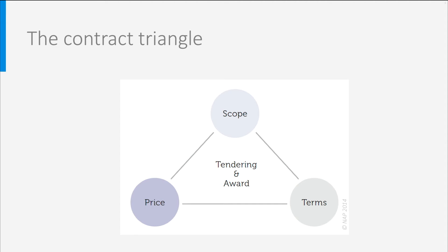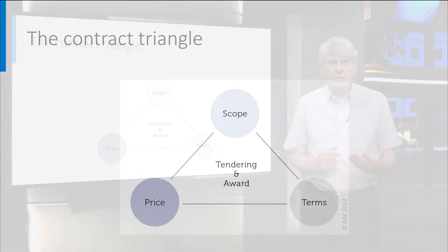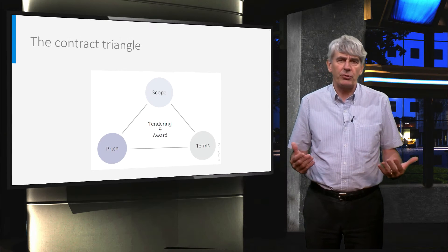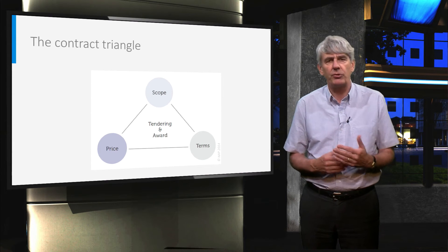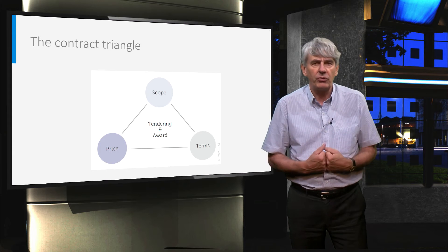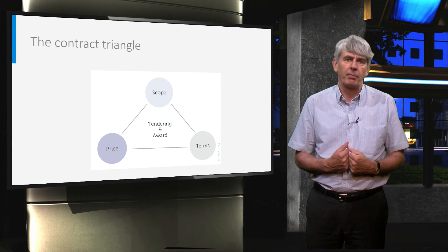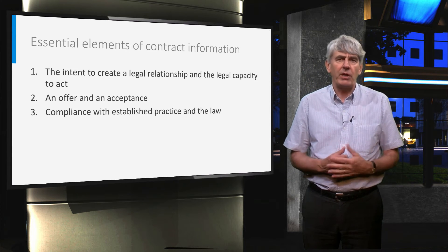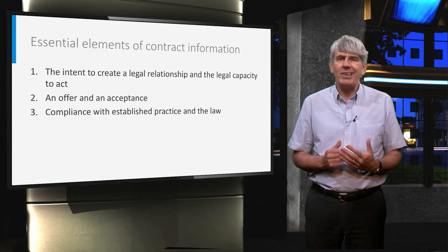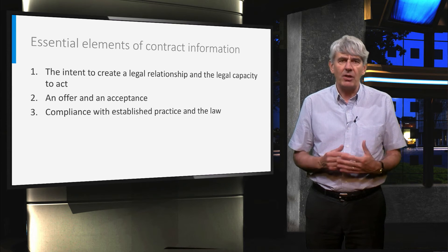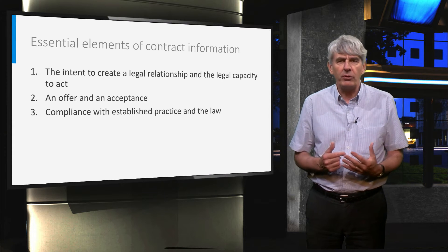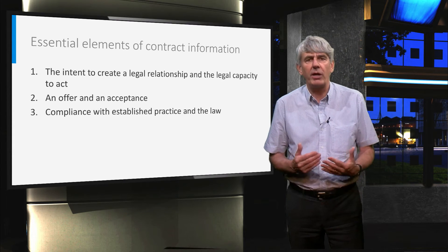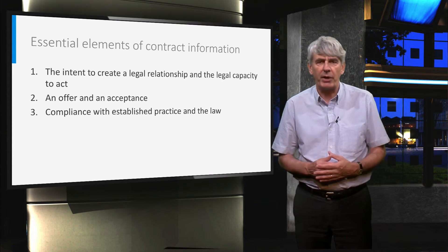As illustrated in the figure, these elements are interrelated. In the contract, a fit-for-purpose balance is established through an iterative process of qualifications and negotiation during the tendering and award process. The main and essential elements of a contract are the intent to create a legal relationship and the legal capacity to act, an offer and an acceptance, and compliance with established practice and the law.